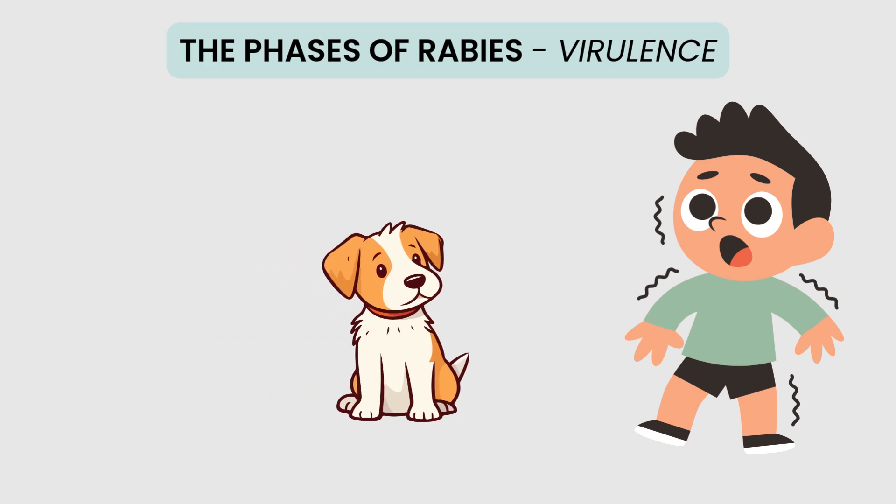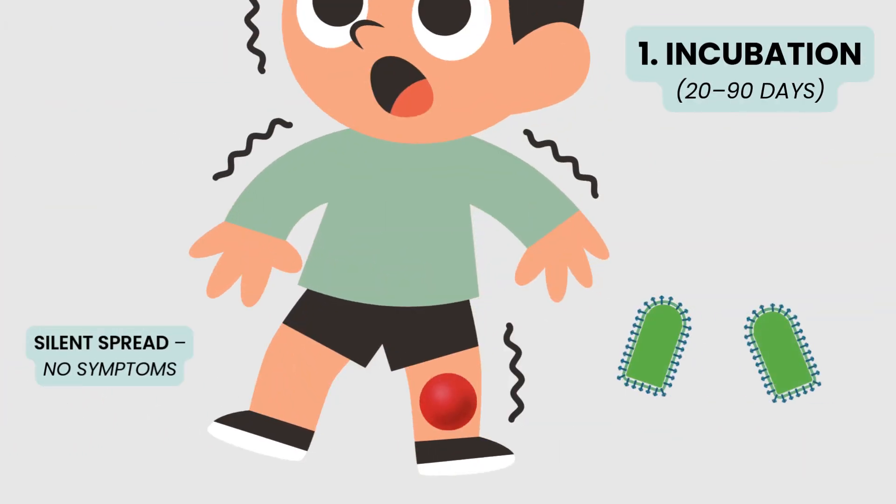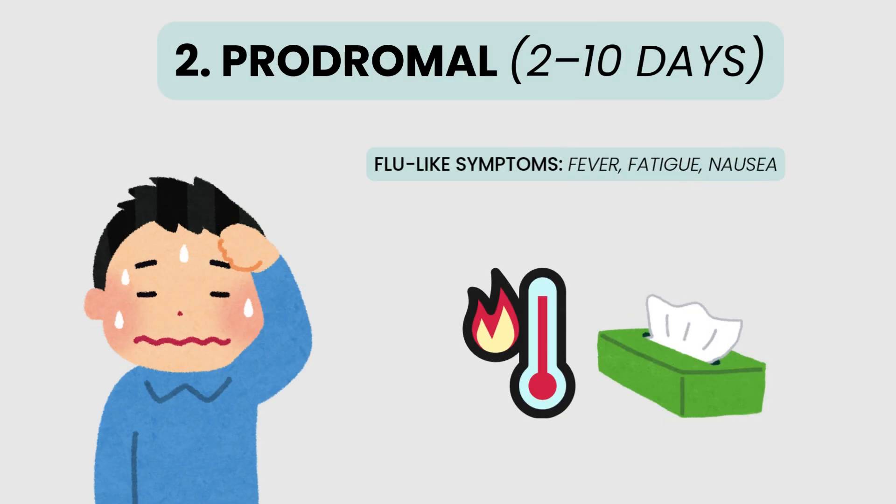Rabies presents in distinct phases. The incubation period lasts 20 to 90 days and is completely silent as the virus spreads from the bite towards the nervous system. This is followed by the prodromal phase, lasting 2 to 10 days.